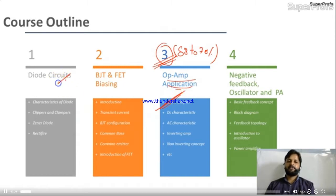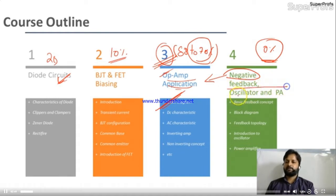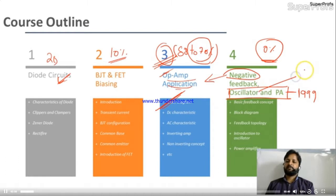Diode circuits are also very important. About 70% of questions come from op-amp, 20% from diode and its applications, and only 10% from the remaining topics, because nowadays we are not getting questions from oscillators and power amplifiers. Negative feedback was covered within the op-amp unit. This last unit comprises oscillators and power amplifiers. From power amplifier we got the last question in 1999; from oscillators we got two questions, in 2015 and 2016.